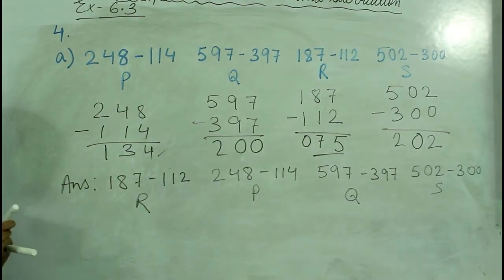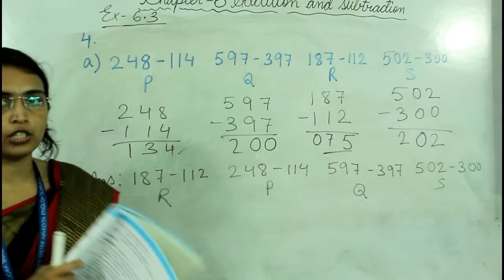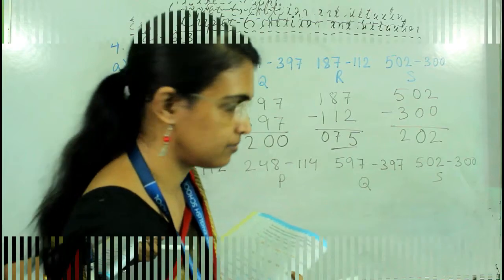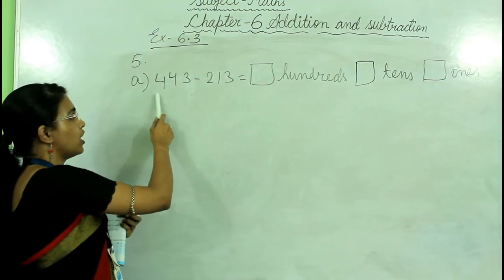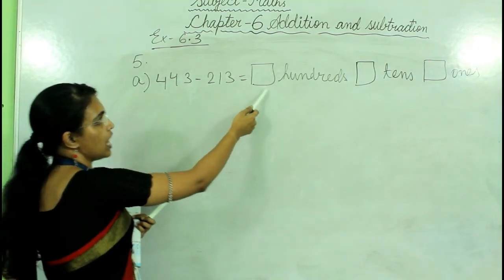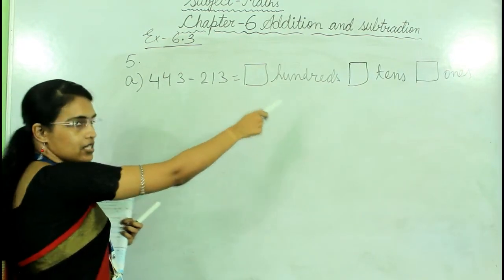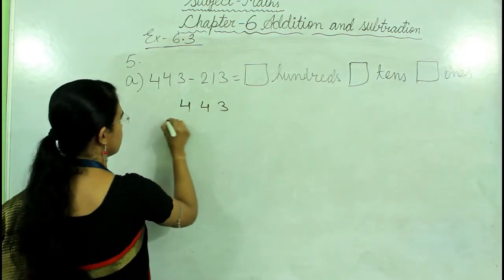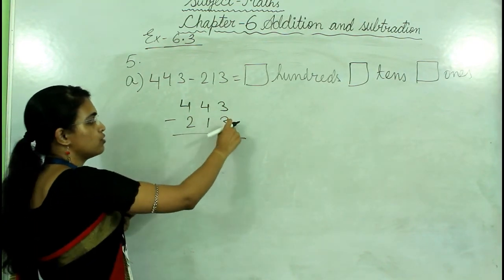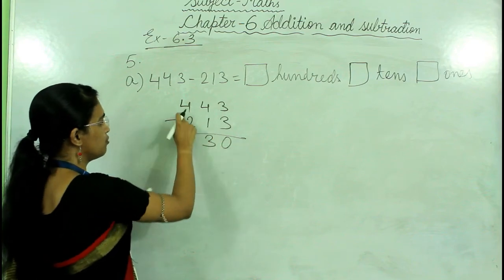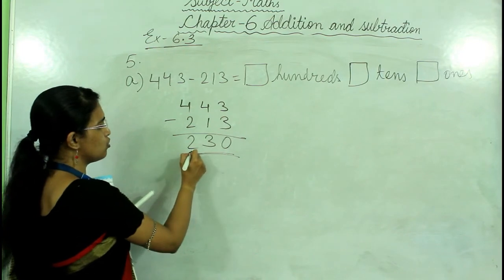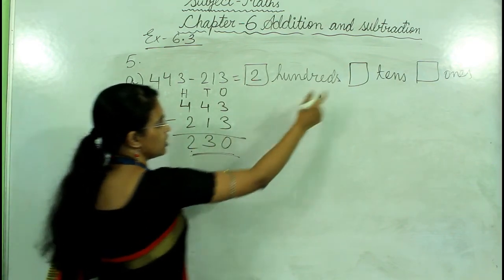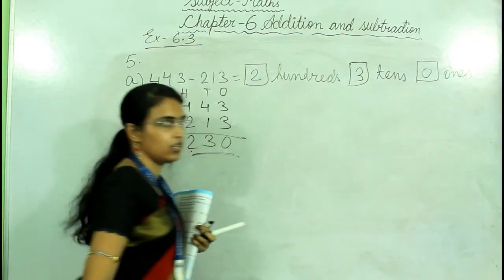Question number A is done; question number B is your homework. Question number 5: 443 minus 213 equals blank hundreds, blank tens, blank ones. Subtract: 3 minus 3 is 0; 4 minus 1 is 3; 4 minus 2 is 2. So the answer is 230 — that is 2 hundreds, 3 tens, and 0 ones.